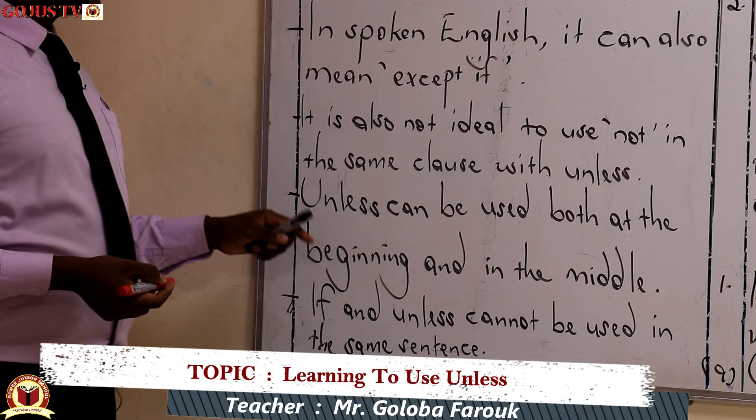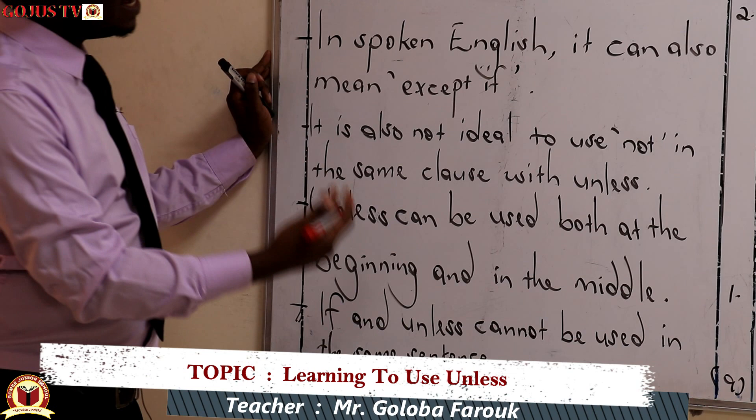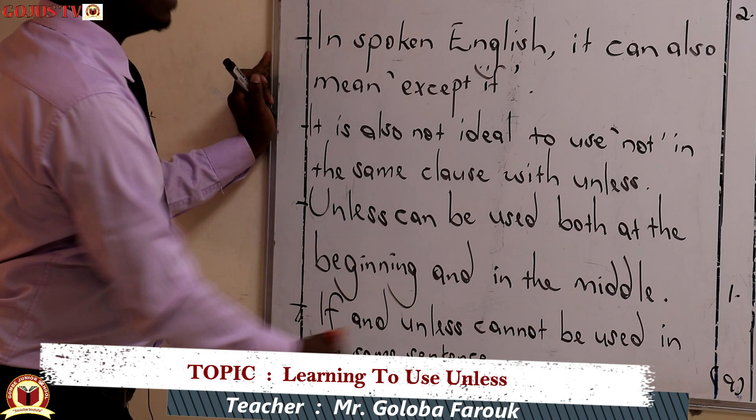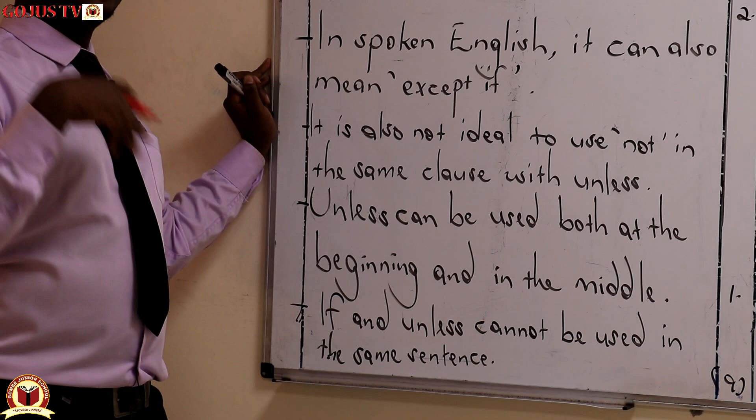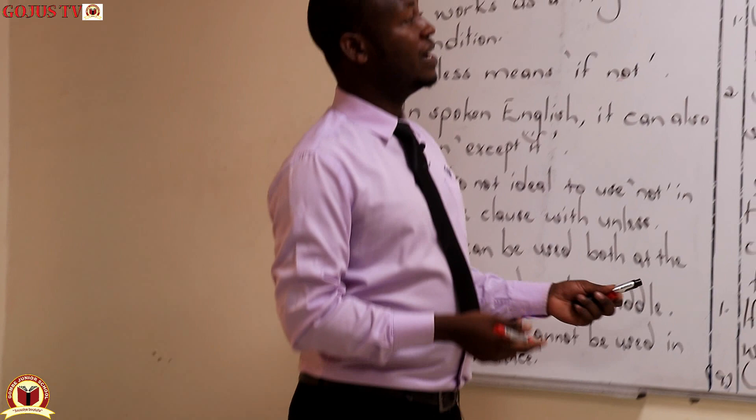'Unless' can be used both at the beginning and in the middle, just like 'if'. We use them both at the beginning and in the middle. Also, since 'if' and 'unless' are both conditionals, they can't be used in the same sentence. A sentence using 'unless' uses 'unless' alone; a sentence using 'if' uses 'if' alone.